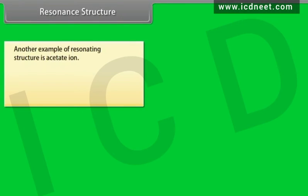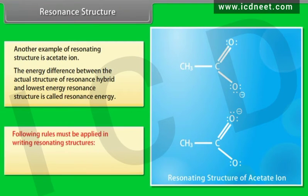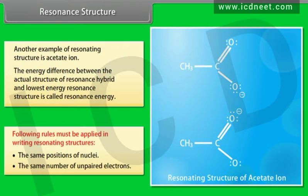Another example of resonating structures is the acetate ion. The energy difference between the actual structure of the resonance hybrid and the lowest energy resonance structure is called resonance energy. In writing resonating structures, the same positions of nuclei and the same number of unpaired electrons must be maintained.